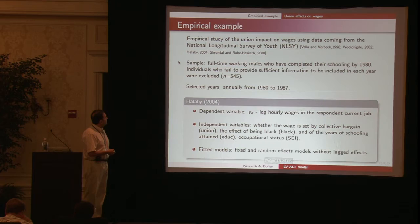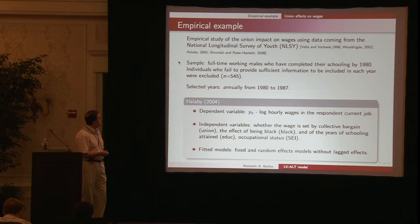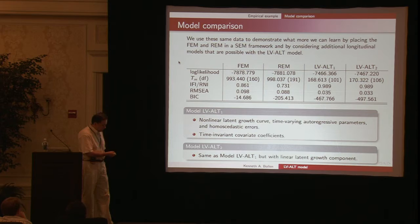Here's an empirical example. This data set has been analyzed in other studies, looking at the impact of being a union member on wages using data from the National Longitudinal Survey of Youth. There's 545 subjects followed annually from 1980 to 87. The dependent variable is natural log of hourly wages. Independent variables are whether wage is selected by collective bargain (the union variable), effect of being black, years of schooling attained, and occupational status.